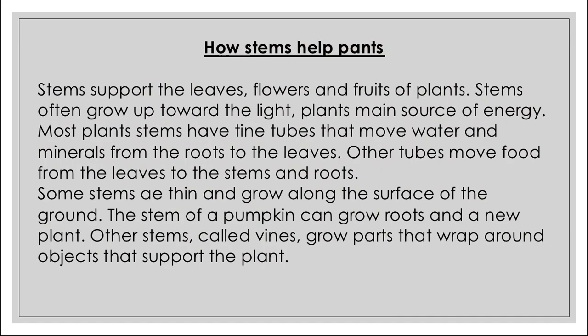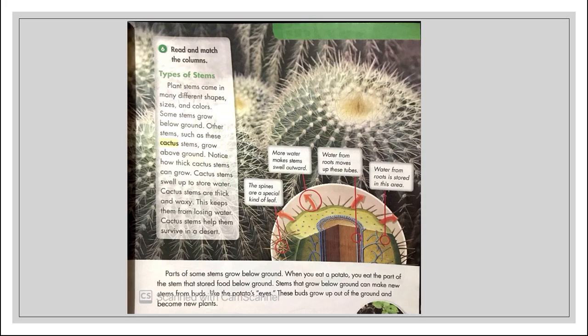Now there is a picture from your textbook — Read and Match the Column. Looking at the types of stems: plant stems come in many different shapes, sizes, and colors. Some stems grow below ground, and some grow above. Cactus stems grow above the ground. Notice how thick cactus stems are — the thick stem is used to store water. Cactus grows mainly in desert areas where there is very little rain, so the thick stem helps it survive by keeping it from losing water.